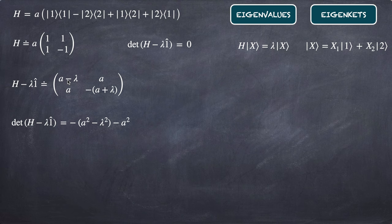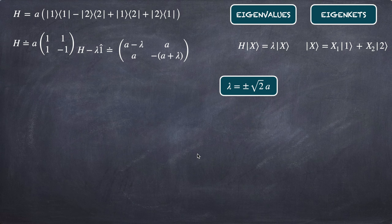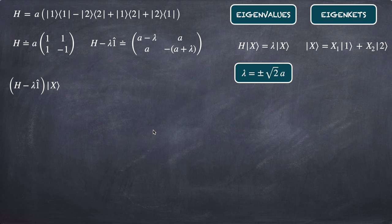The determinant gives (a − λ)(−a − λ) minus a², which expands to λ² − 2a² = 0. Solving, we get λ² = 2a², so the eigenvalues are λ = ±√2 · a. These are our two energy eigenvalues.